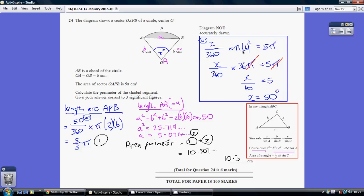From then onwards it's fairly straightforward. 6 times 6 is 36, we've got a π on both sides, so they cancel. 36 divided by 360 is a tenth, so x over 10 equals 5, so x equals 50 degrees, so we know this is 50 degrees.